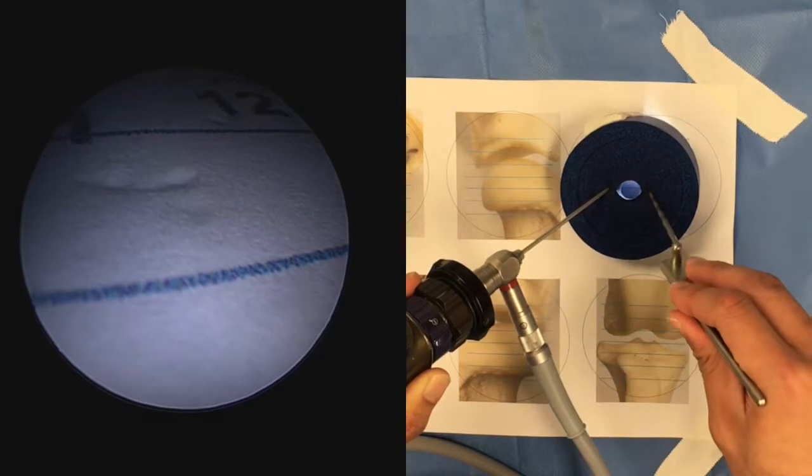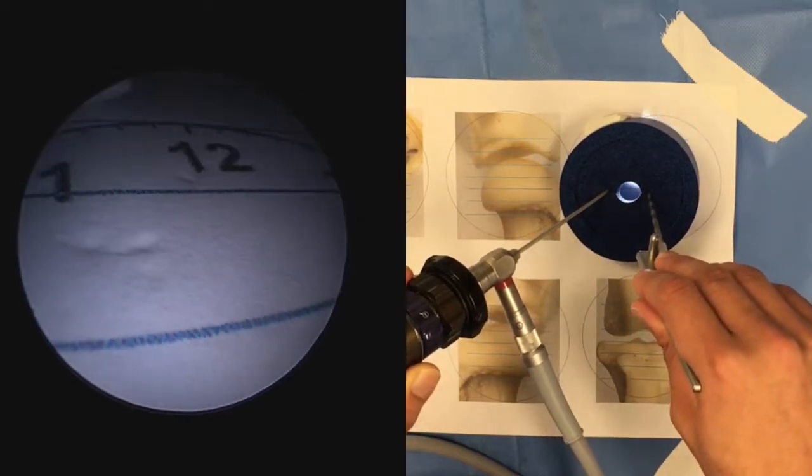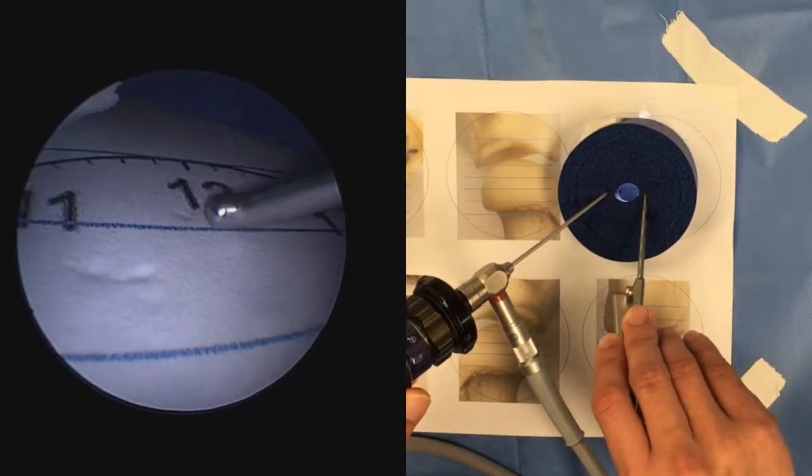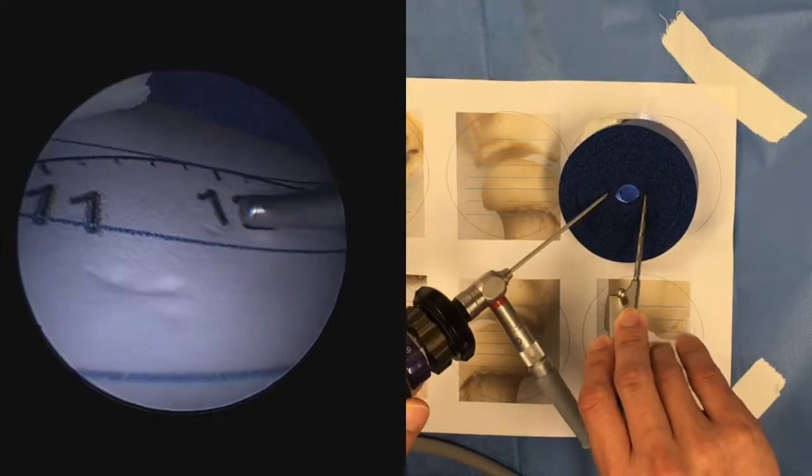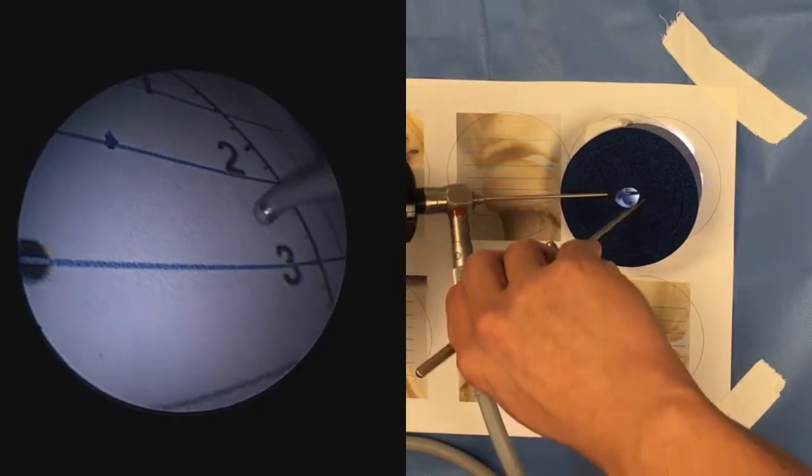If we can't find our tip, back out a little bit with the scope. Then it should be easier to find the tip of the instrument.